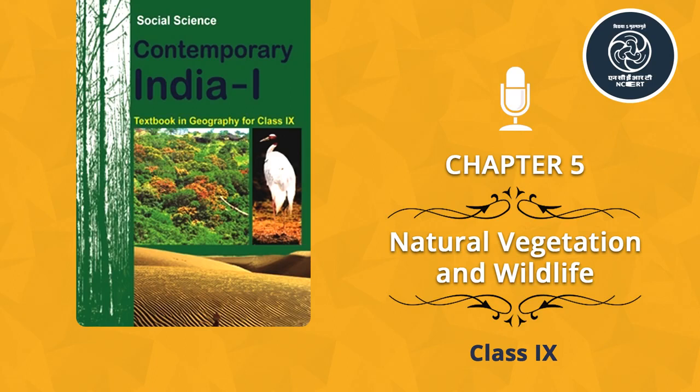Soil: The soils also vary over space. Different types of soils provide basis for different types of vegetation. The sandy soils of the desert support cactus and thorny bushes, while wet, marshy, delta-like soils support mangroves and delta-like vegetation. The hill slopes with some depth of soil have conical trees.